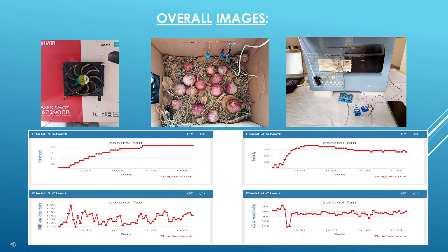This slide presents an overview of an experimental setup for monitoring environmental conditions, likely for agricultural or storage applications. The top row features three images: a cooling fan attached to a box, a storage setup with onions and sensors inside a cardboard box, and an electronic control system with multiple wired components.